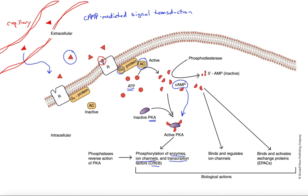Cyclic AMP can also act through a couple of other pathways. It can bind directly and regulate ion channel permeability, or it can bind to and activate another group of proteins called exchange proteins, which are molecular switches themselves that go ahead and activate proteins through a separate mechanism.